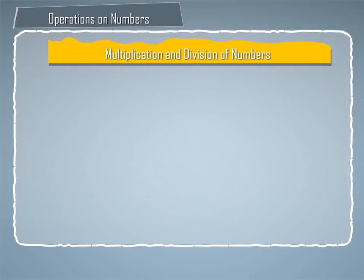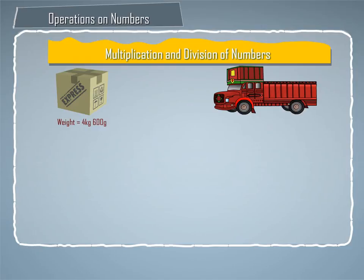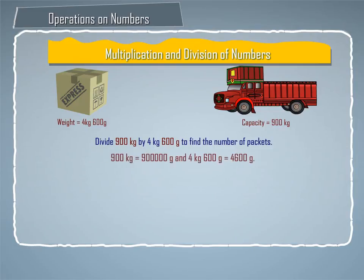Let us take another example. Some packets, each weighing four kilogram six hundred gram, are to be transported. What is the maximum number of such packets that can be loaded in a truck which cannot carry beyond nine hundred kilogram? Divide nine hundred kilogram by four kilogram six hundred gram to find the number of packets.